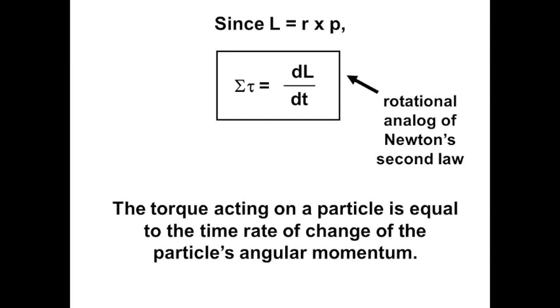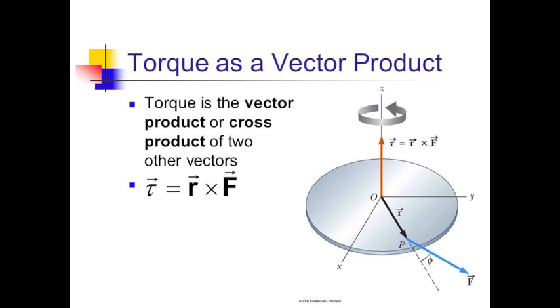Now back to angular momentum — torque is the derivative, with respect to time of course, and it's also the cross-product of distance from the pivot and force. At physics we never suck.